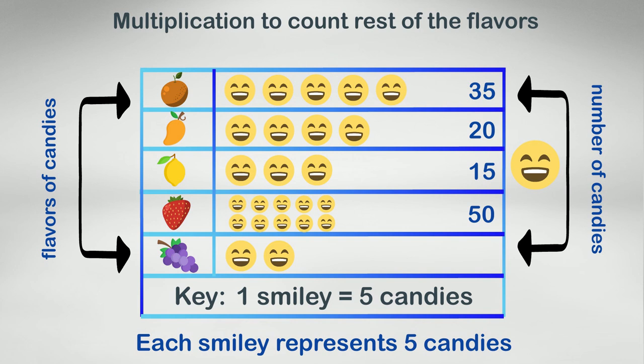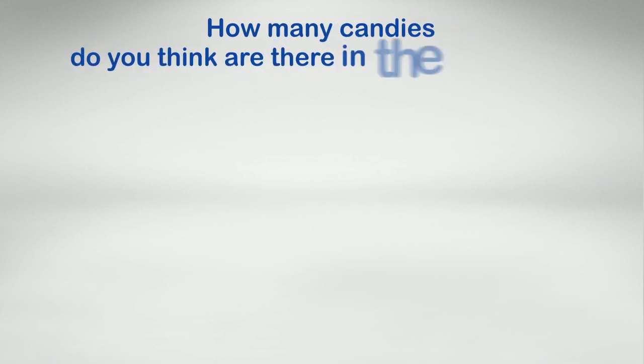For grape candies, there are two smileys and each smiley is equal to five candies, so two into five is equal to ten. Thus the package has 10 grape candies. How many candies do you think there are in the bag in total?